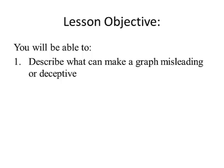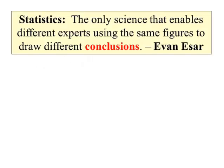Misrepresentations of data — less than objective. Describe what can make a graph misleading or deceptive. Let's start with a quote: 'Statistics, the only science that enables different experts using the same figures to draw different conclusions.' This sets the tone for this section. We're going to be looking at how graphs contain or display the same information but the viewer may draw different conclusions.